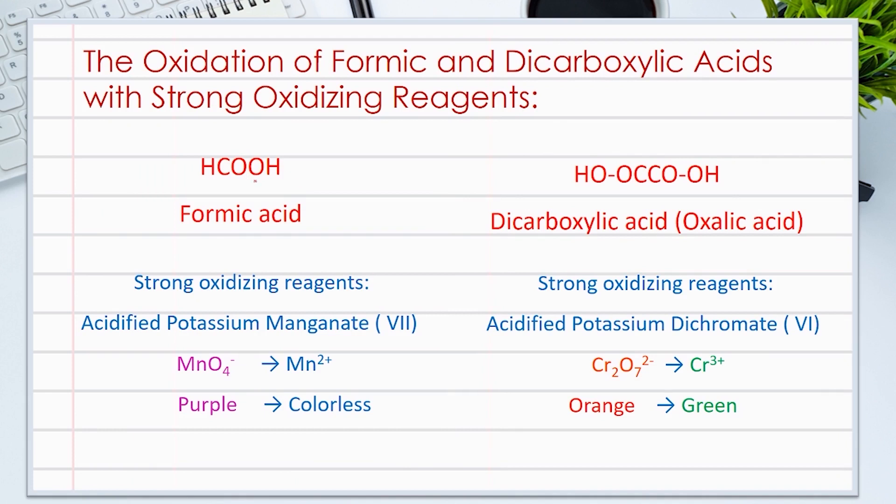Other oxidizing reagents can be used to detect the presence of formic or dicarboxylic acids. Both acidified potassium manganate and acidified potassium dichromate are strong oxidizing reagents that can oxidize both formic and dicarboxylic acids. For potassium manganate, the purple color of manganate ion MnO4- turns into manganeseous ion Mn2+, and the orange Cr2O7 2- dichromate ion turns into green chromium 3+ ion.